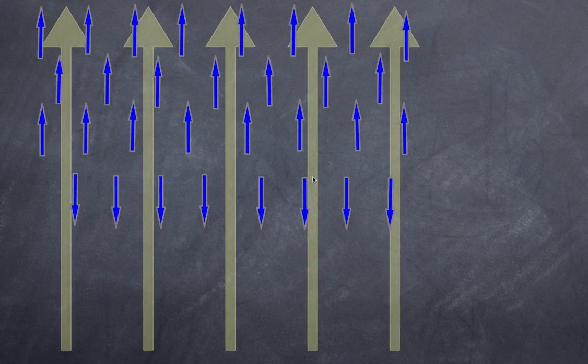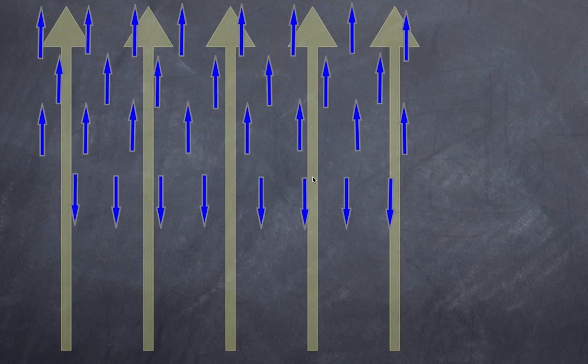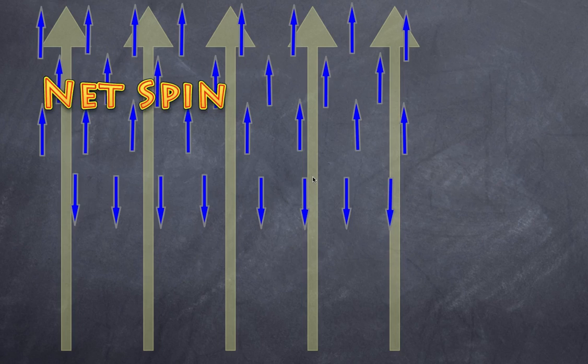Welcome back to High School Physics Explained and today I'm doing part 3 on my series on the workings of MRI. If you've watched my previous two videos, here's a quick recap. We talked about how nuclei have a thing called net spin that causes them to have a slight magnetic dipole.